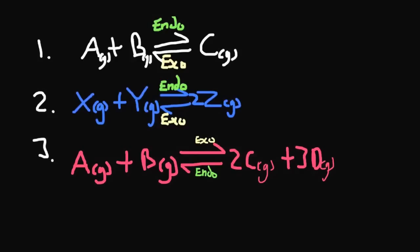For question 3, we have two gaseous moles on the left-hand side and five gaseous moles on the right-hand side. So if we increase the pressure, the equilibrium will shift from right to left — going to the side with the least number of gaseous moles — so forming more of our reactants A and B. The forward reaction is exothermic and the backward reaction is endothermic, so if we increase the temperature, the reaction will shift in the endothermic direction, again forming more of A and B.